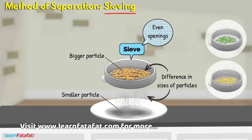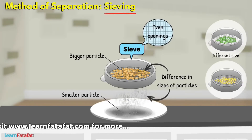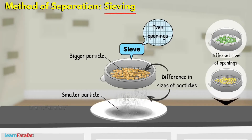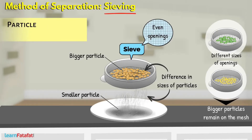Different sieves have different sizes of openings. The particles having a smaller size than the sieve openings pass through the mesh, while the bigger particles remain on the mesh. Thus, the particles of different sizes get separated.